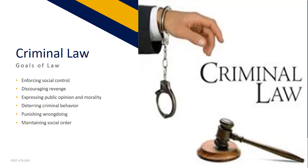Deterring criminal behavior: criminal law has a social control function — it can control, restrain, and direct human behavior through its sanctioning power. The threat of punishment associated with violating the law is designed to prevent crimes before they occur. Punishing wrongdoing: the deterrent power of criminal law is tied to the authority it gives the state to sanction or punish offenders. Those who violate criminal law are subject to physical coercion and punishment. Maintaining social order: all legal systems are designed to support and maintain the boundaries of the social system they serve. The contents of criminal law are a reflection of the needs of those who control the existing economic and political system.